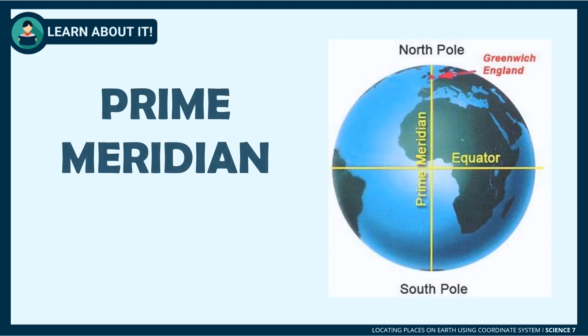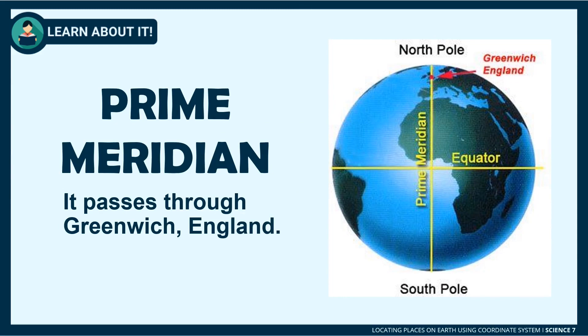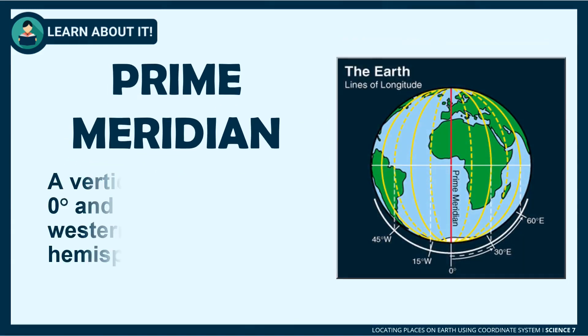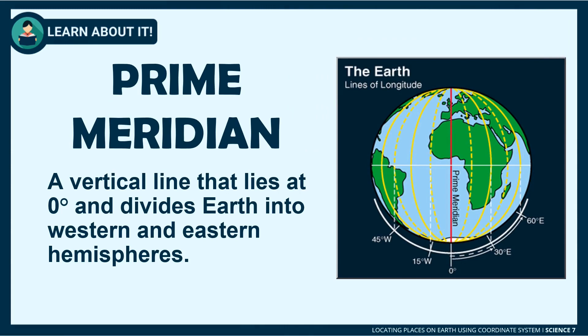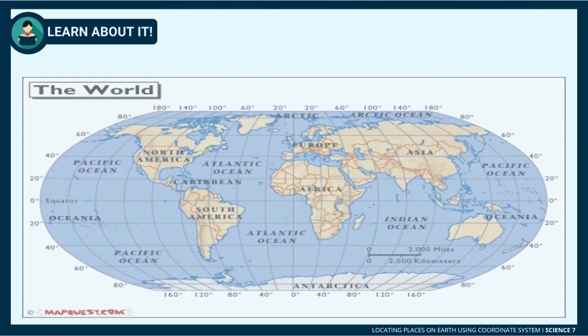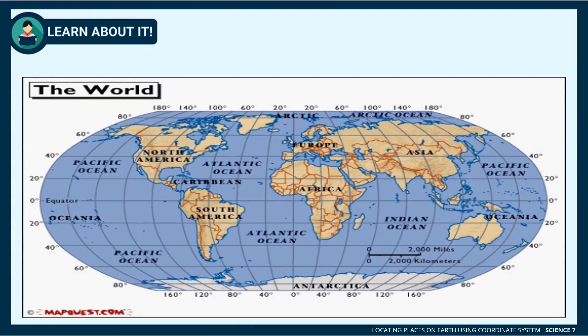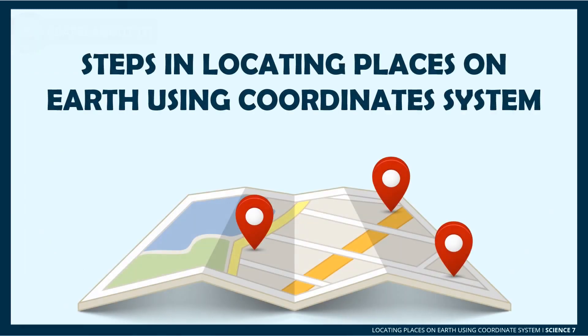Lines that run from north to south are called longitudes. The longitude which passes through Greenwich, England is called the Prime Meridian. The Prime Meridian divides the western and eastern hemisphere of the world. As a reference point, the Prime Meridian is read as zero degrees longitude. The degree increases as it moves westward or eastward until it reaches the longitude opposite to the Prime Meridian, the Antimeridian.